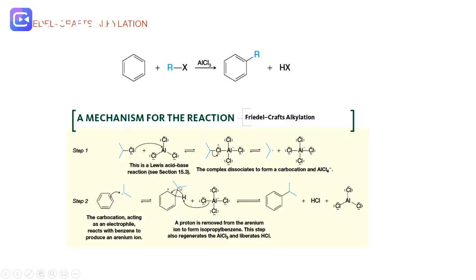And here we will have an arenium ion. The arenium ion would like to be aromatic again, so tetrachloroaluminum will abstract this proton, and then we will have the final product, also Lewis acid and HCl.